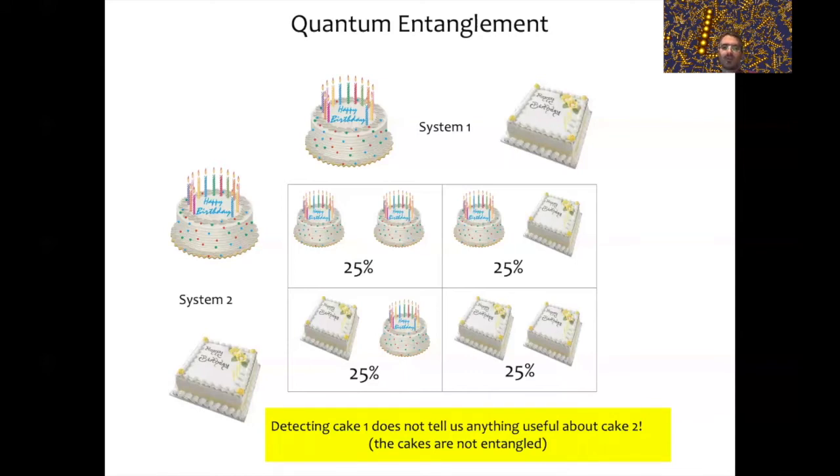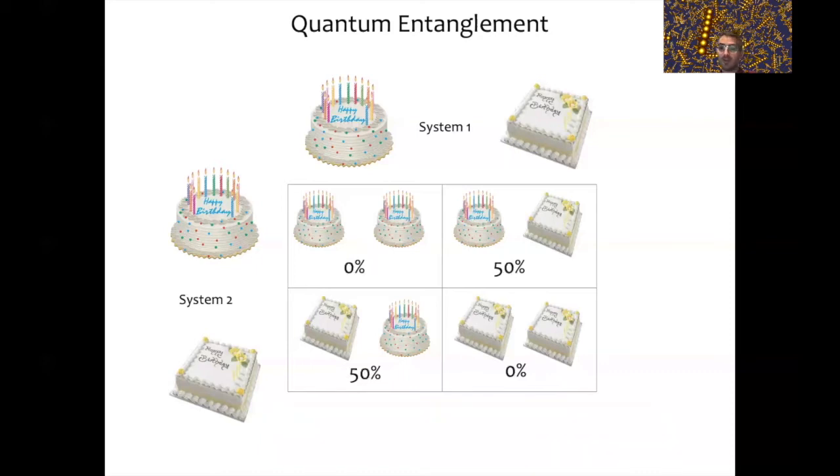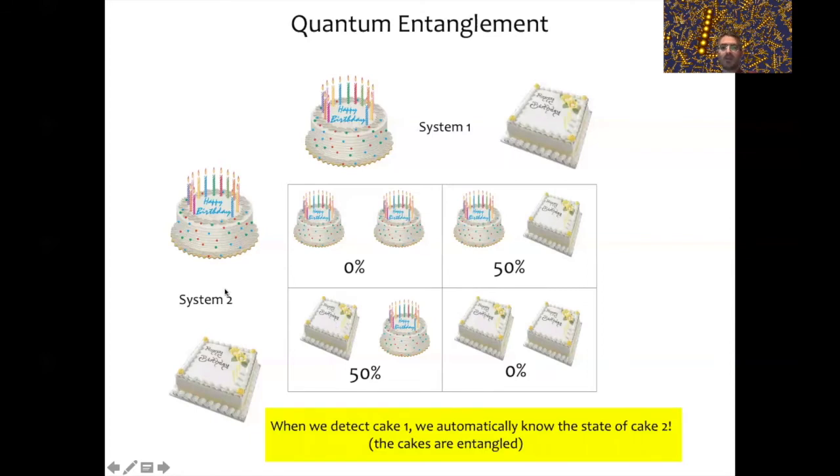Now let's change this experiment and prepare the cakes in a slightly different state, where we have just 50-50 probability for the cakes to be of different shapes. Let's do exactly the same experiment: we measure the first cake, we find it to be a round cake. Did we learn anything useful about the second cake? Now if we find that the first cake is round, it means that the second cake actually has to be a square cake. The point here is that when we detected cake number one, we automatically learned something about cake number two—we are now sure that the second cake is actually a square cake. This is what happens when the cakes are entangled.